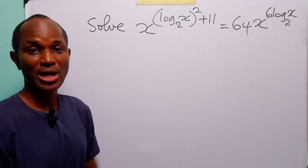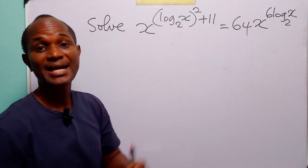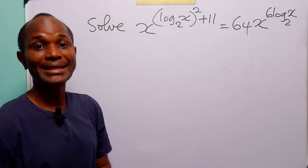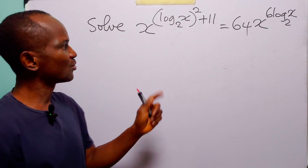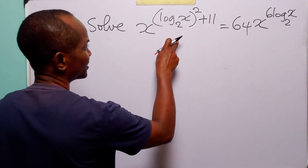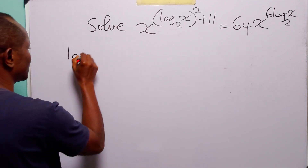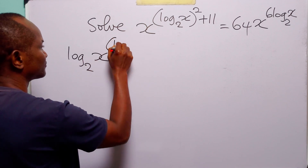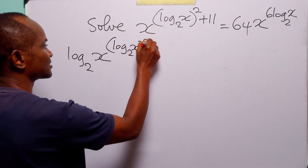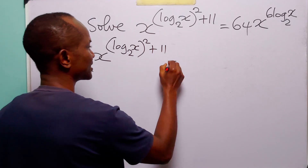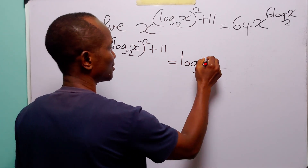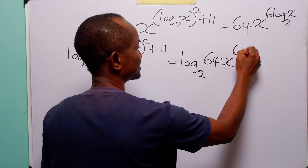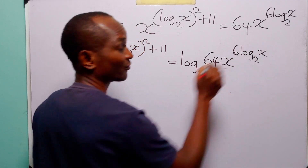To solve this problem, we are going to start by taking log of both sides of the equation. Since the problem is given in base 2, we are going to continue working in base 2. So when we take log to base 2 of both the left-hand side and the right-hand side, we have log to base 2 of x to the power log to base 2 of x, squared plus 11, is equal to log to base 2 of 64 times x to the power 6 times log to base 2 of x.